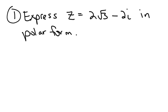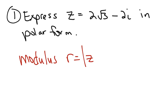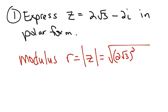Let's look at this problem. We want to express z equals 2 the square root of 3 minus 2i in polar form. The first thing we have to find is the modulus — that's our r, which is the absolute value of z, equal to the square root of a squared plus b squared. Notice that b is really negative 2, not positive 2.